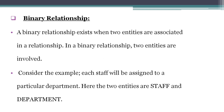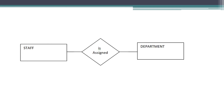Second one: Binary Relationship. A binary relationship is nothing but the association of two entities. In a binary relationship, two entities are involved. For example, each staff will be assigned to a particular department. The two entities here are staff and department.